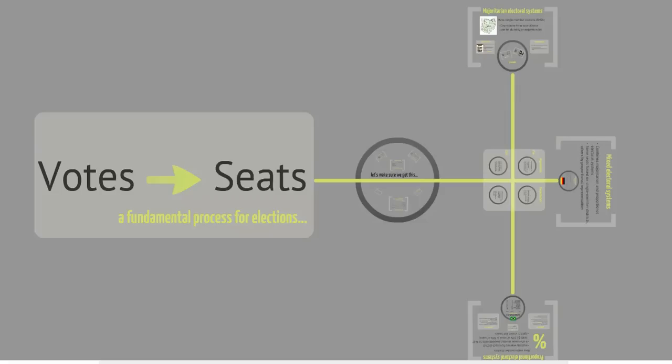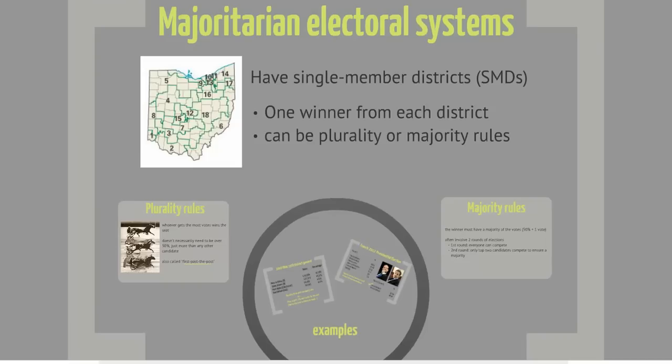Let's start with the kind of system that we're most familiar with here in America, and that is a majoritarian electoral system. These systems have single-member districts, which simply means that the polity is divided into electoral districts, and each district sends one representative after the election. To the left here you can see the old Ohio electoral districts — single-member districts for the House of Representatives races.